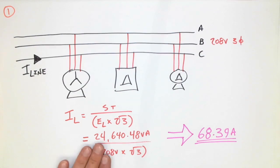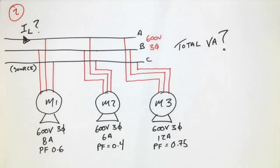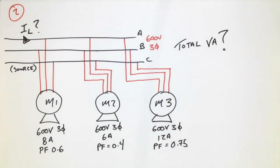Let's look at another example. The second example, we want to know I line and the total VA. It's a 600-volt three-phase system with three separate motors. They're all rated 600 volt, with line currents of 8 amp, 6 amp, and 12 amp, and power factors of 0.6, 0.4, and 0.75. The same as the previous example, I'm first going to develop a power triangle for each one of those individuals.